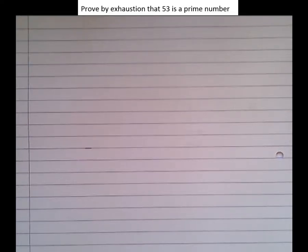We're now going to look at proof by exhaustion, which means proof by looking at an exhaustive list of all possibilities. The question asks us to prove by exhaustion that 53 is a prime number. That means we're going to look at every possible factor of 53 to check whether it is a factor or not.